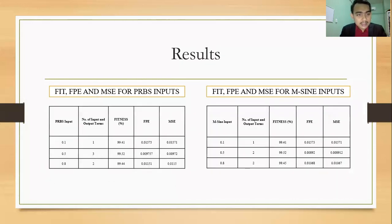So this is the result for best fit, FPE, and MSE for input PRBS and multi-sign. So as you can see, both input use three probability band, which is 0.1, 0.5, and 0.8.